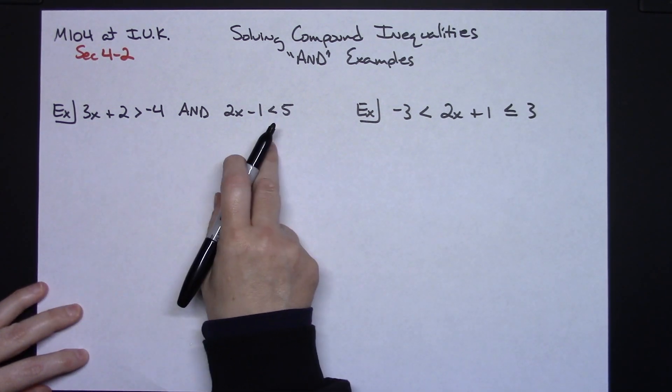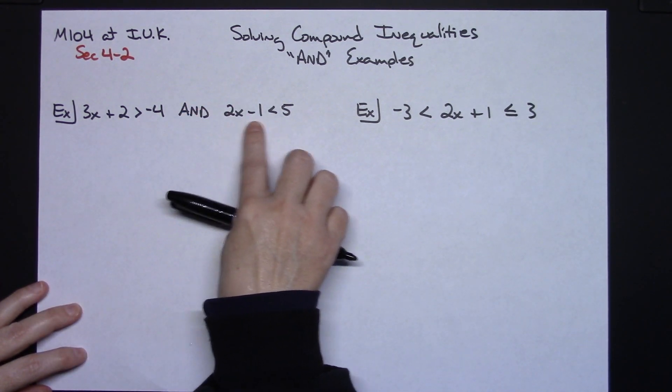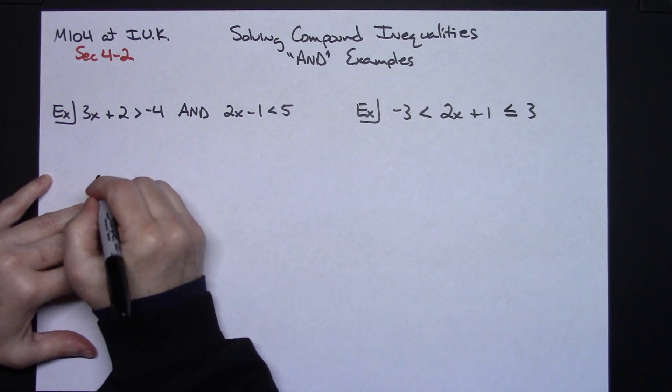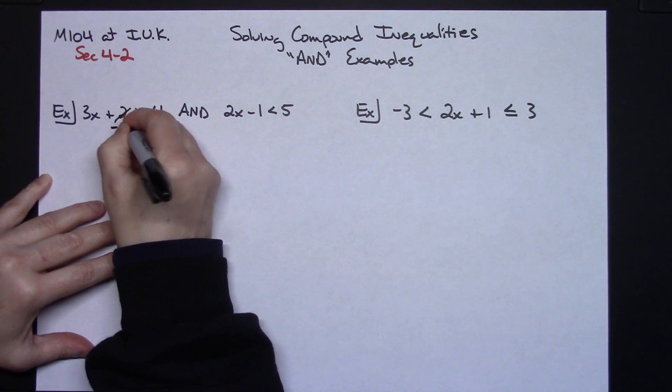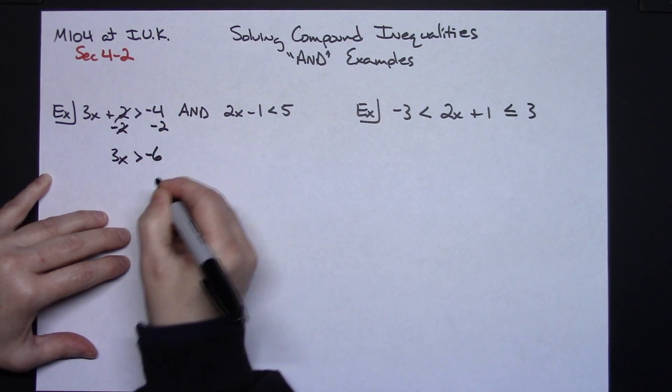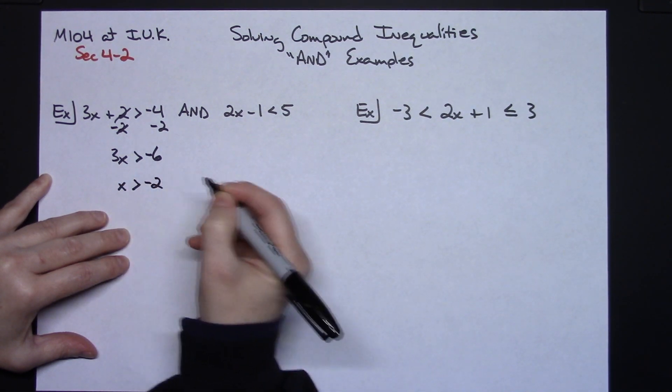So basically on this one, it's straightforward. This is a two-step inequality. This is a two-step inequality as well. So you're going to do the algebra and solve this just like you always have. So we're going to subtract 2 from both sides of the equation. We're going to have 3x is greater than negative 6. Going ahead and dividing by that 3, we'll have x is greater than negative 2.